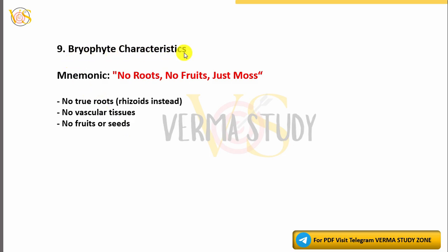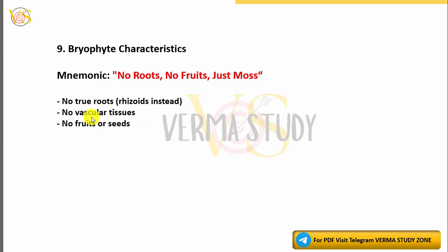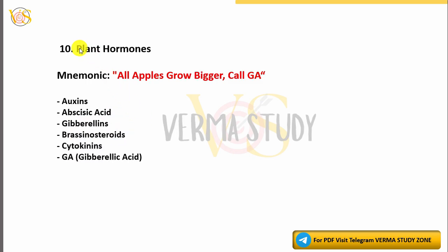9. Bryophyte Characteristics Mnemonic: 'No Roots, No Fruits, Just Moss.' No true roots — rhizoids instead. No vascular tissues. No fruits or seeds.